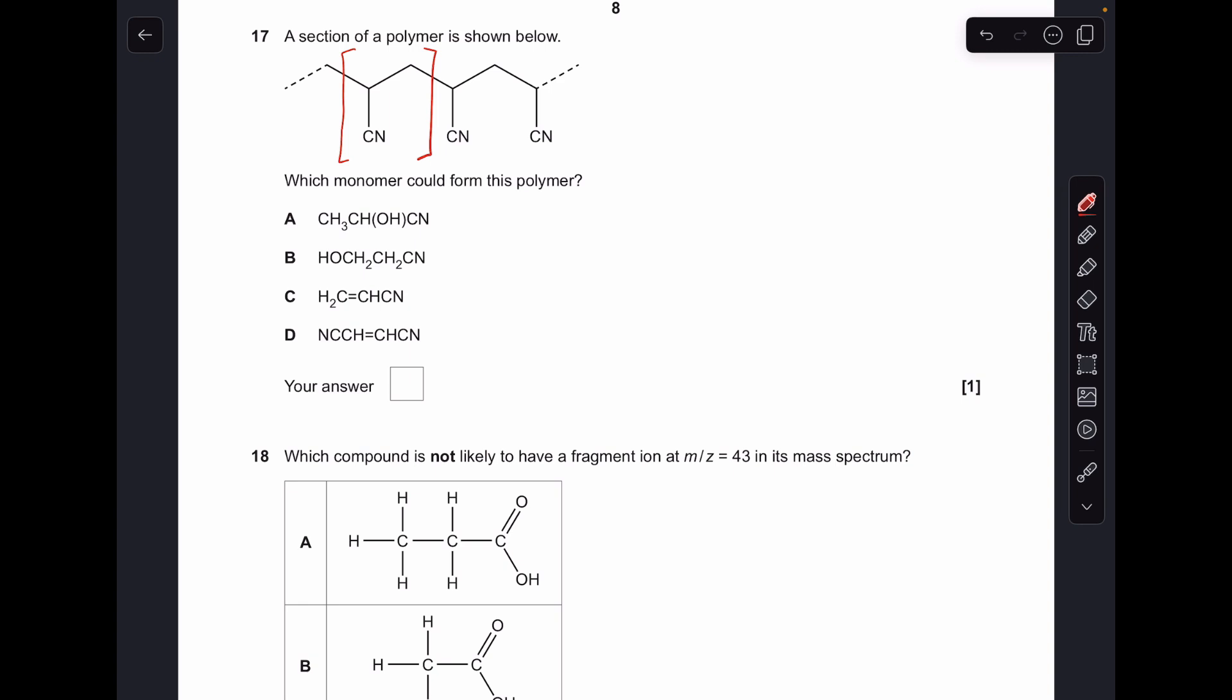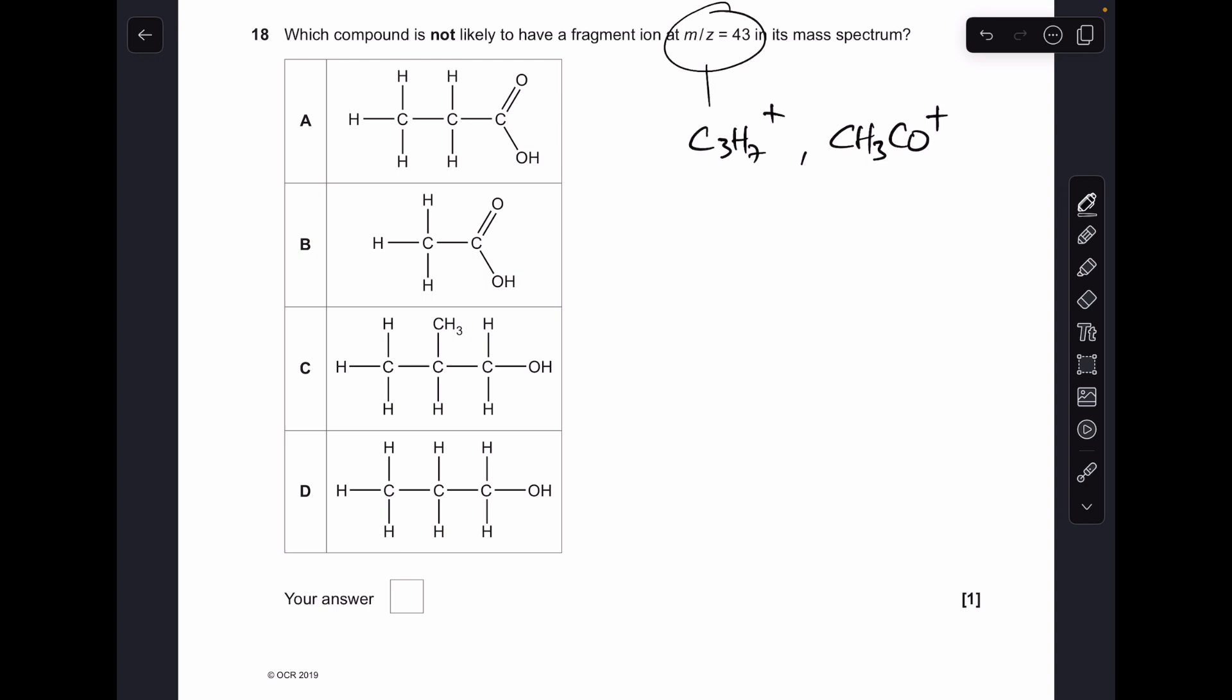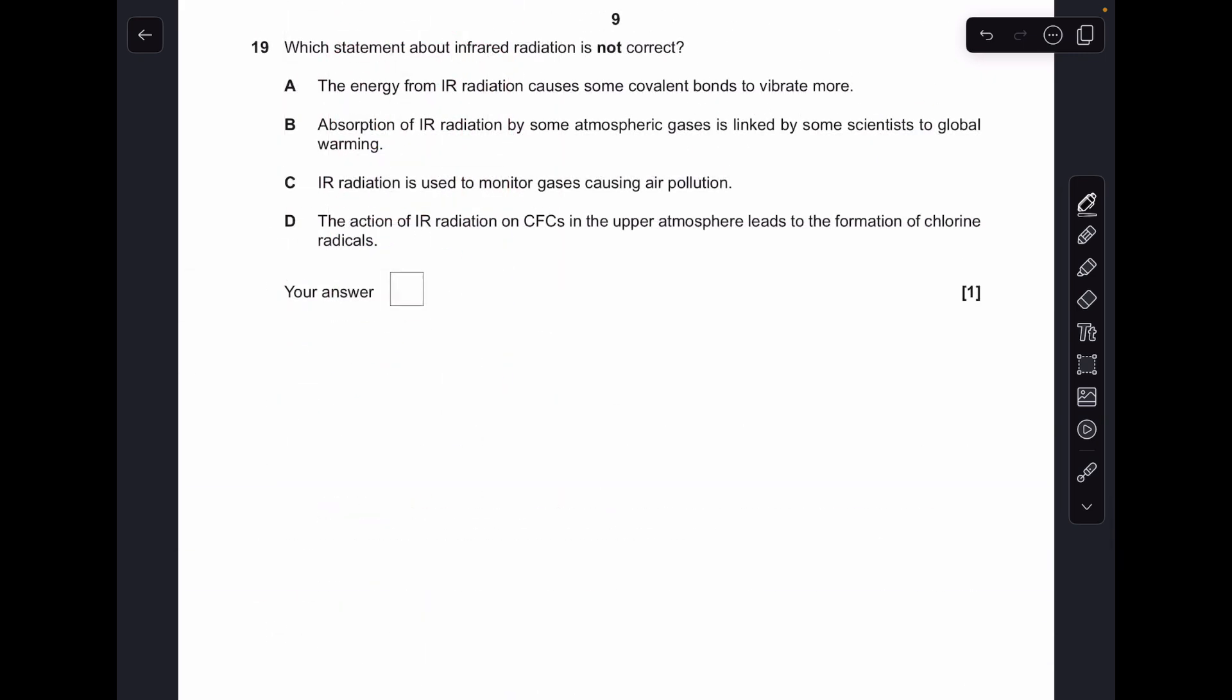Number 18, so fragment ions with m over z 43 are going to be C3H7 plus or CH3CO plus. So we need to look at these four and see if they do contain that fragment that could break off and give the fragment peak. So you can see that B, C, and D do contain those fragments, so A must be the answer.